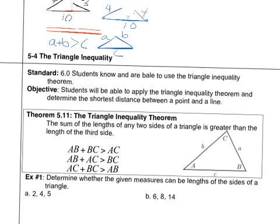So AB plus BC is greater than AC. AB plus AC is greater than BC. And AC plus BC is greater than AB.